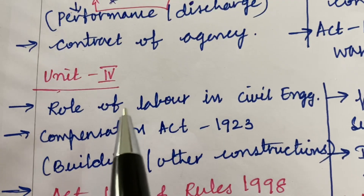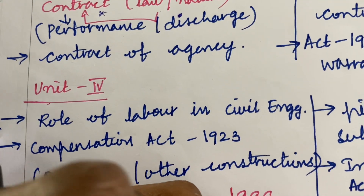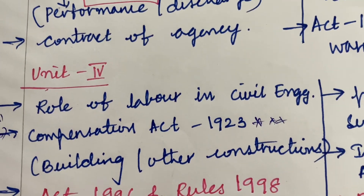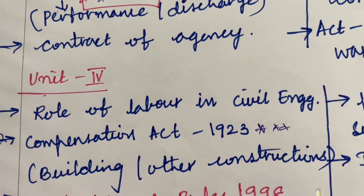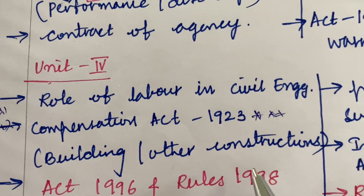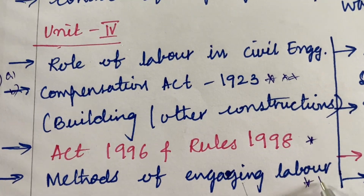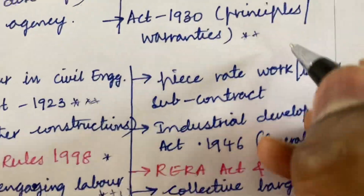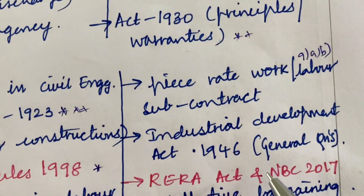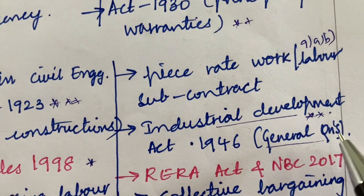Moving to Unit 5, this covers question 7, and 8A and 8B. The role of labour in Civil Engineering, the Compensation Act 1923, is one of the top most short questions, along with building and other constructions. You can write the subject in the examination using your own points with suitable examples. The Act 1996, Rules 1998, and methods of engaging labour are short questions — this is an 8A and 8B combination. For 9A and 9B, it is all about piece-rate work and the labour subcontract.